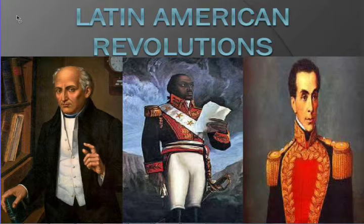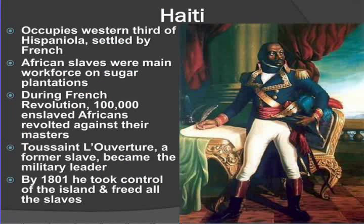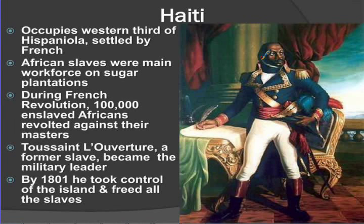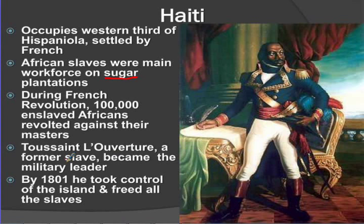Haiti — this is an island in the Caribbean. This island was occupied by the French and is part of the area known as Hispaniola. African slaves were brought in to work on sugar plantations. During the French Revolution, 100,000 enslaved Africans revolted against the French masters. This guy, Toussaint Louverture, a former slave, became their military leader. So this is a slave revolt taking place in the early 1800s.